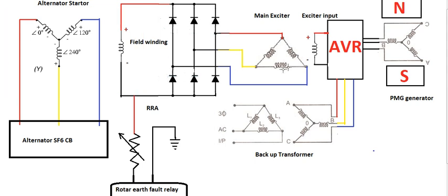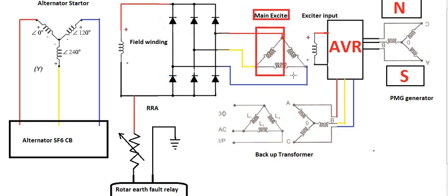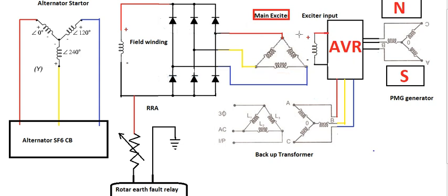Then we will use the main exciter. This is the main exciter — this is the delta winding. The main exciter is a generator. I will talk about it.